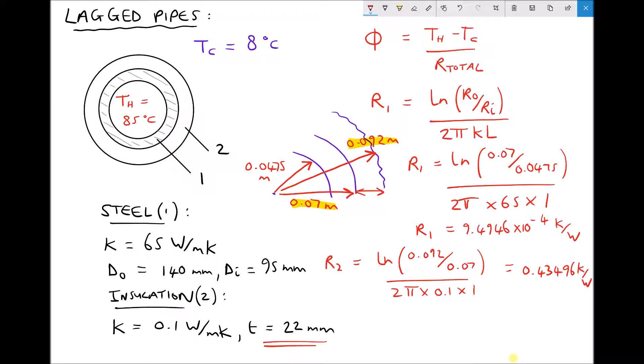So now that we have the two individual thermal resistances, we can calculate the total. The total is just the sum of the thermal resistance of the steel plus the thermal resistance of the insulation. And adding those two together, we get 0.43591 accurate to 5 decimal places. Once again, that's Kelvin per watt.